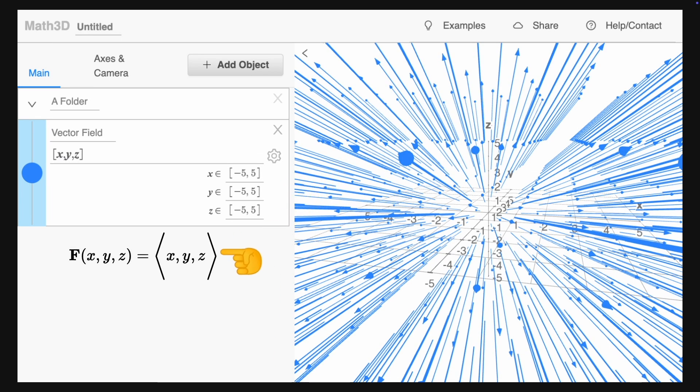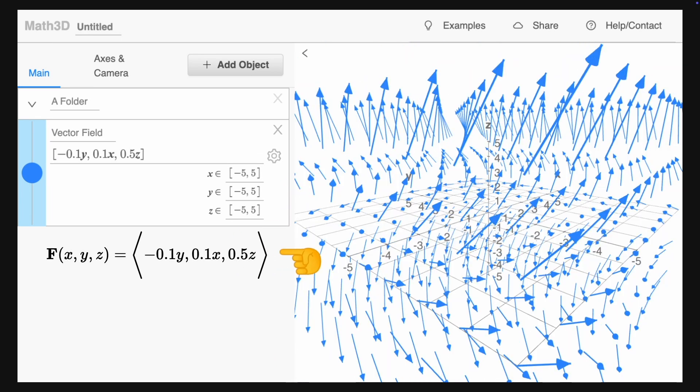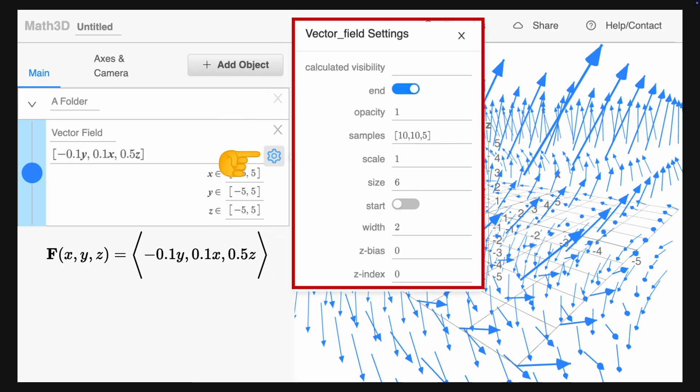With this tool, we can easily input the components of vector fields that we want to explore. We can modify the range where x, y, and z are defined, and by clicking on the gear button, we can modify a few extra settings.